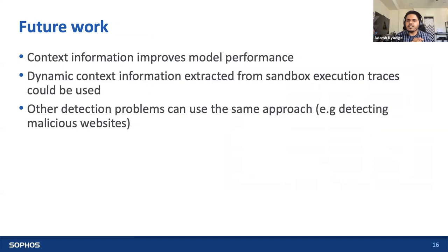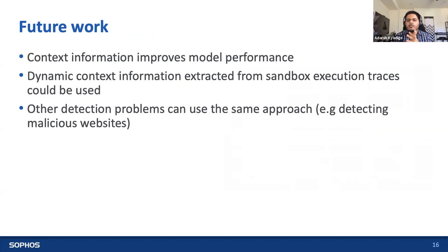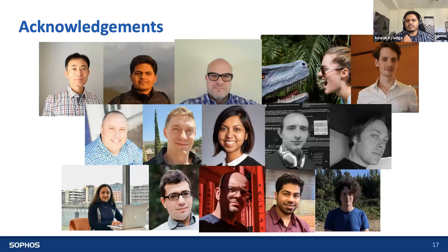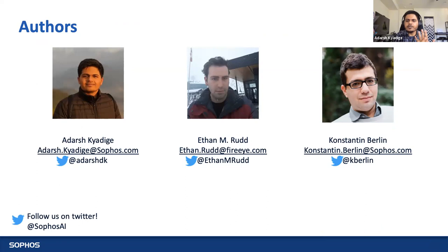To summarize, using file paths as an additional input to a static detection model improves performance significantly, especially when tested on a real-world customer distribution. This research can be extended by including more context information about a file, potentially from sources that perform dynamic analysis. The concept of a multi-view model can also be applied to other security problems with orthogonal information sources, such as malicious web detection using URLs, HTML content, text, and images on a website. Thanks to Sophos for funding this research and the Sophos AI team for contributing. Follow our Twitter page at Sophos AI or contact the authors using email addresses and handles on the slide.